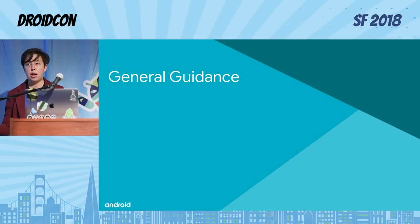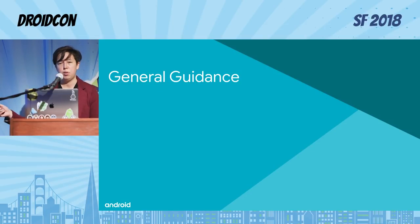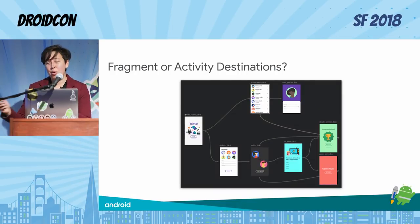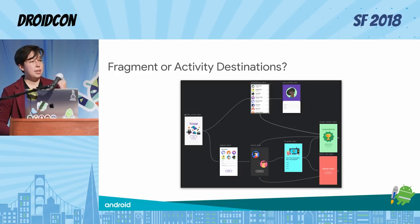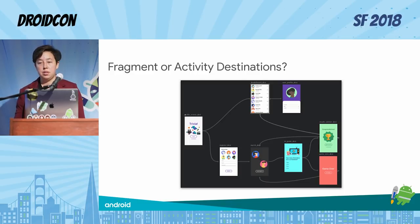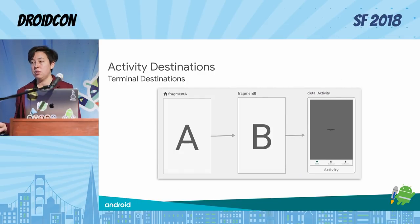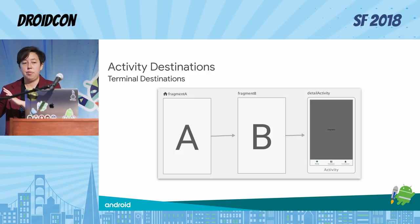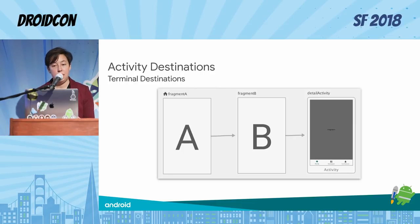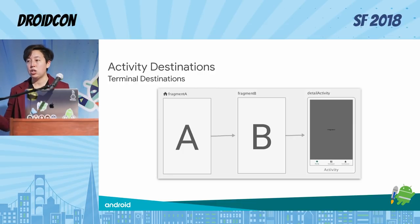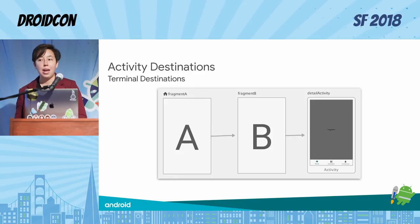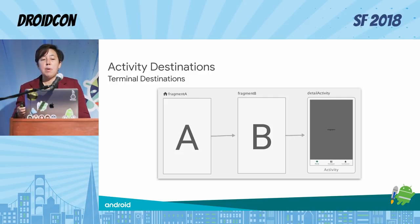Now some general guidance before jumping into a more complicated navigation UI example. Folks ask whether they should be using fragment destinations or activity destinations. It's perfectly possible to use activity destinations, but they are terminal destinations — you won't have actions going out of them, and they'll have their own navigation graph. So if your app is a bunch of activities, you're not really going to get the benefit of having a single graph displaying all the different paths.